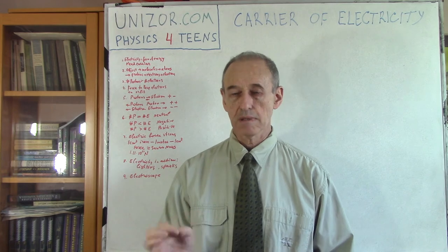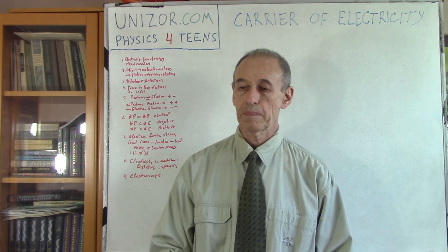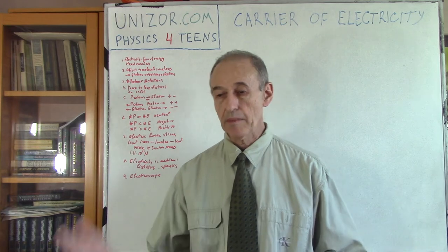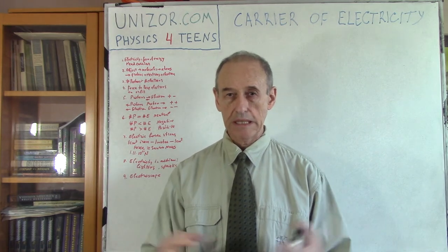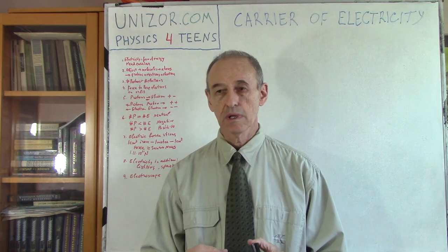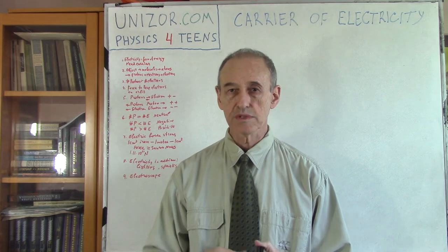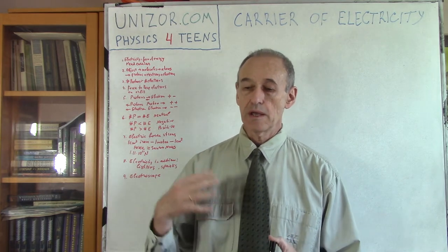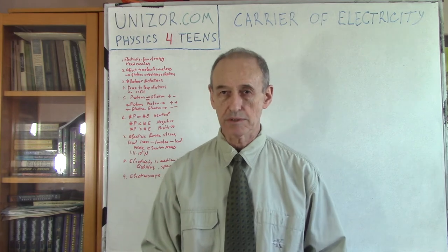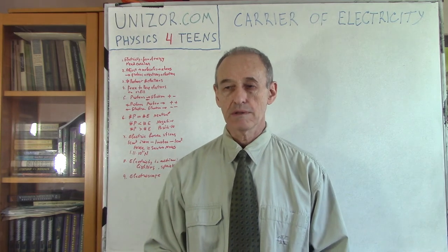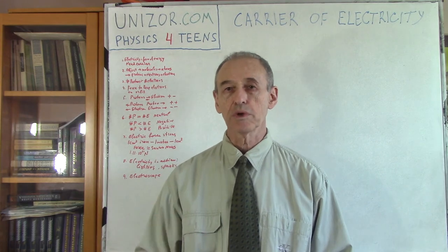The faster molecules oscillate, the higher the temperature is. There are other forms of energy, like chemical energy, which is basically inside the molecules between the different atoms which hold the molecules together. So if we are talking about electricity, we have to have something which carries electricity — which is the substance based on which we can talk about electricity.